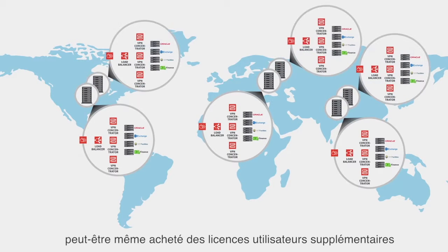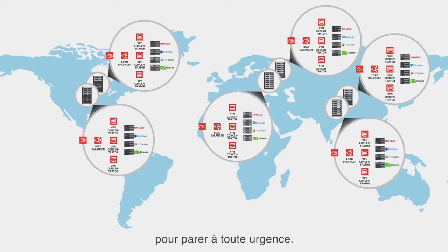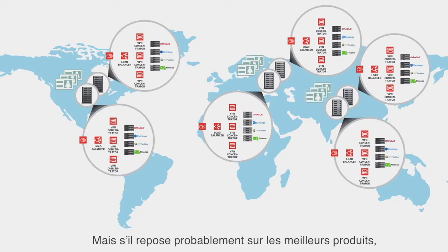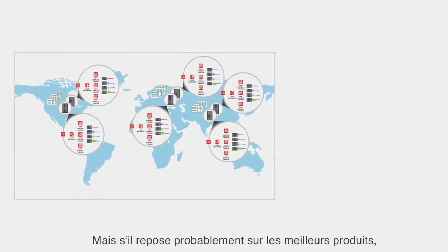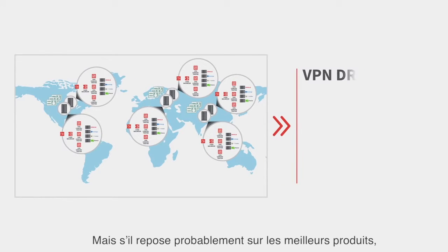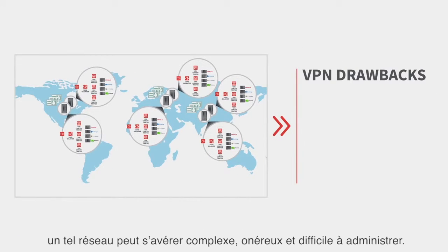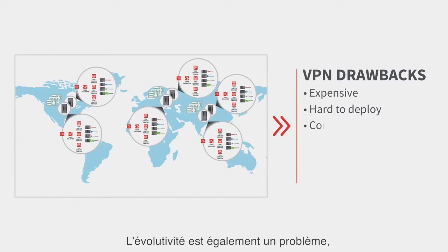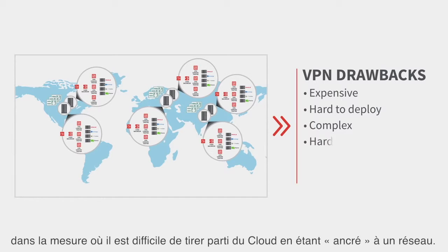And to ensure availability, you've had to provision redundant instances of those data centers, as well as possibly purchase additional user licenses in case of emergency. The resulting network, even though it's probably built on best-in-class products, can get really expensive, hard to maintain, and complex. Scalability is also an issue, because it's hard to take advantage of the cloud when you're anchored to a network.